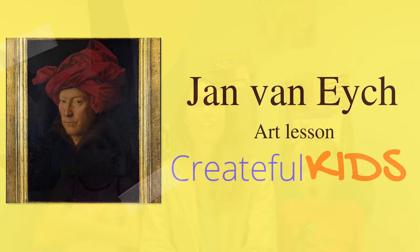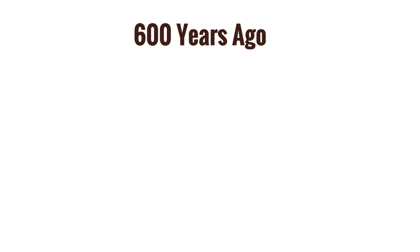Welcome to Createful Kids! Today we're going to learn about Jan van Eyck, a famous artist that lived 600 years ago. We don't know exactly when he was born, but we think it's somewhere around 1390, and he lived to the year 1441, so he lived about 50-ish years.